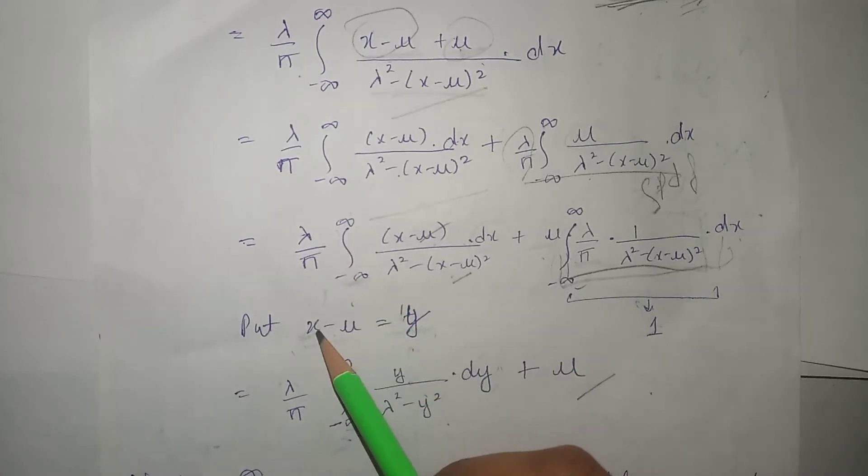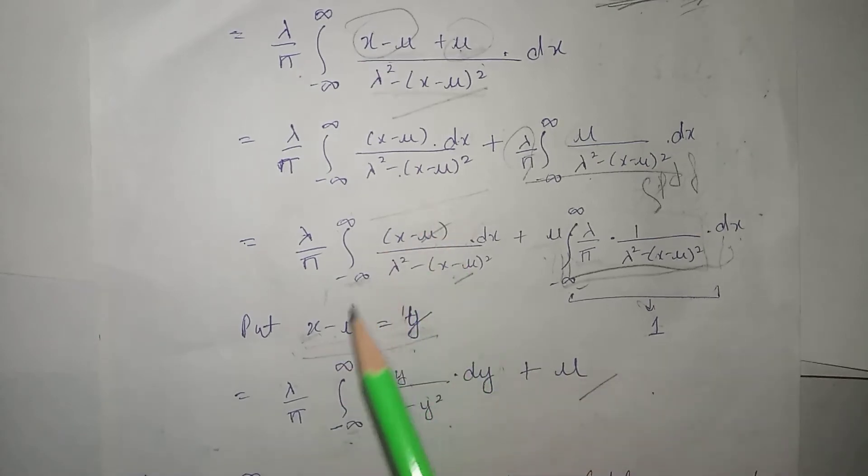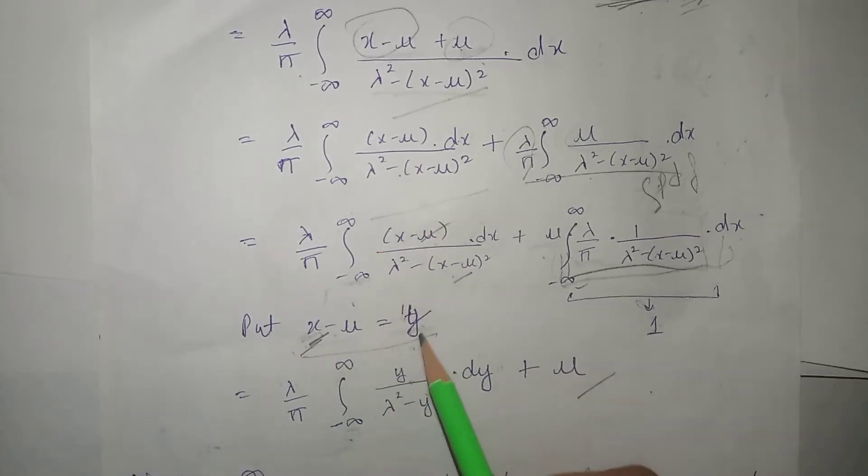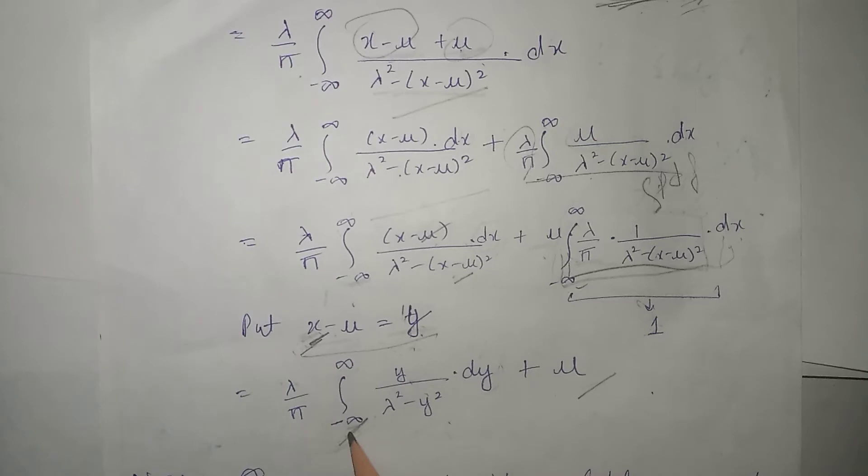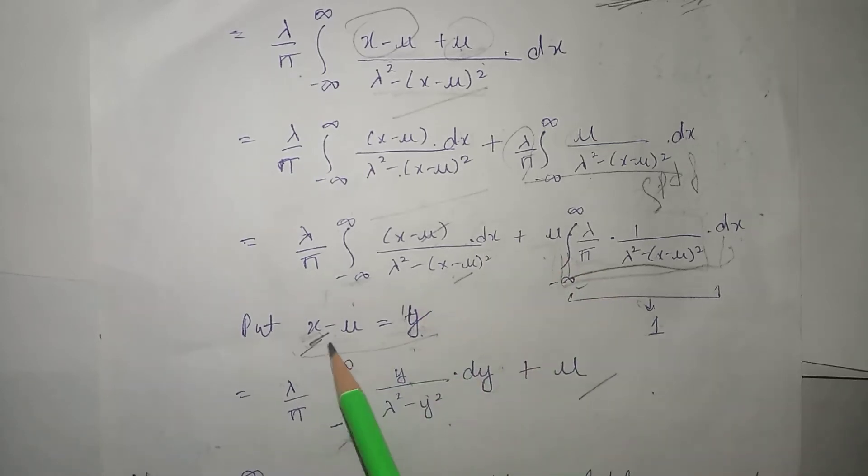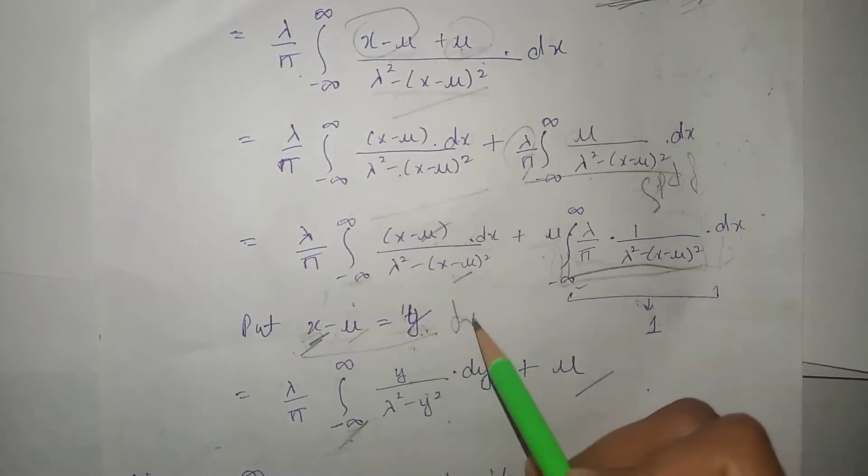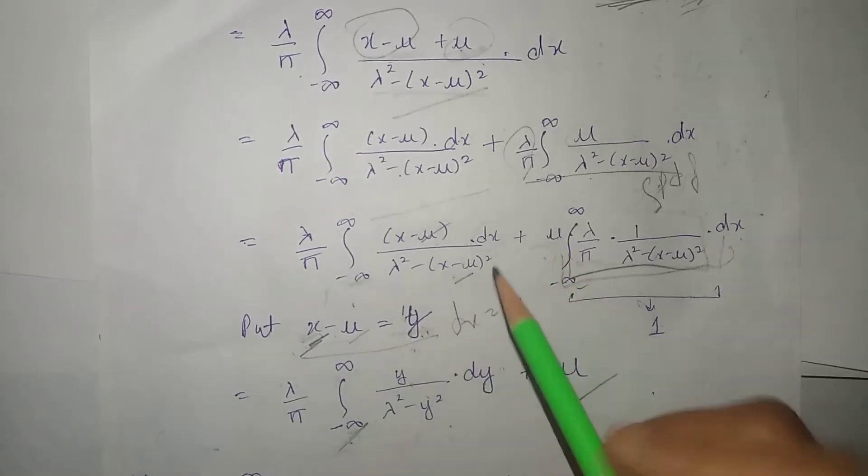So, jab x ki value infinity thi, tab y ki value kya aayegi, obviously infinity hi aajayegi. Jab x ki value minus infinity put karayenge, tab bhi y ki value minus infinity hi aajayegi. Next, abh humne nikalna hai dx ki jaghah per dy. Both sides, agar haam differentiation karde, to obviously ye constant term hai, humare paas aajayega dx is equals to dy. That's why humne dx ki jaghah per dy put kar diya.